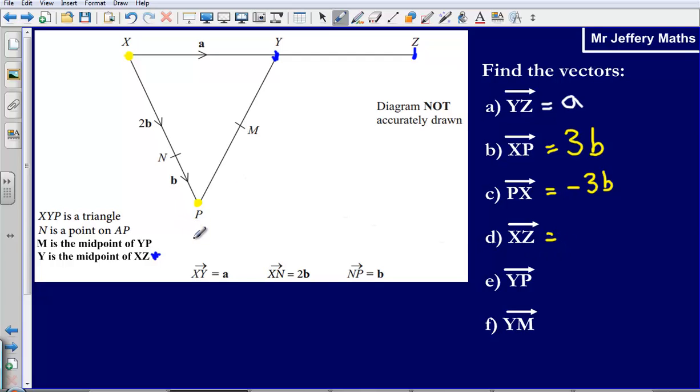Now XZ. I know that XY is a. I worked out earlier that YZ was also a, so I could say that it's a plus another a, so that is 2a.